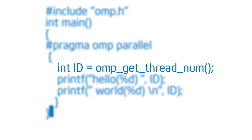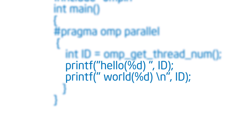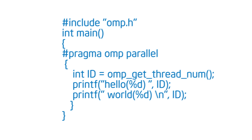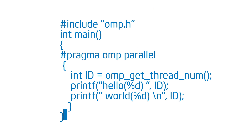That's going to give me an identifier for each thread, and it's going to range from zero up to the number of threads minus one. So it's a unique identifier for each thread — its thread ID. Then I have those print statements: print hello ID, print world ID. Then I have the closing brace which closes that structured block. You enter at the top and you exit at the bottom — that's my structured block that binds with the parallel pragma.